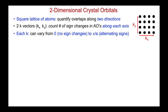Let's take another step towards three-dimensional crystals by extending our approach to two-dimensional materials. Specifically, we'll look at a square lattice of atoms. We're going to need to quantify the overlaps of the signs of the atomic wave functions in the crystal orbitals along two different directions, x and y. So we're going to require two k vectors, kx and ky, and we'll need to count the number of sign changes along each axis. As in the 1D system, k can vary from zero — no sign changes — all the way up to π/a, where we have alternating signs. Both directions can do this, and we'll explore different relationships between kx and ky, generating bonding, non-bonding, and anti-bonding interactions in the resultant crystal orbitals.